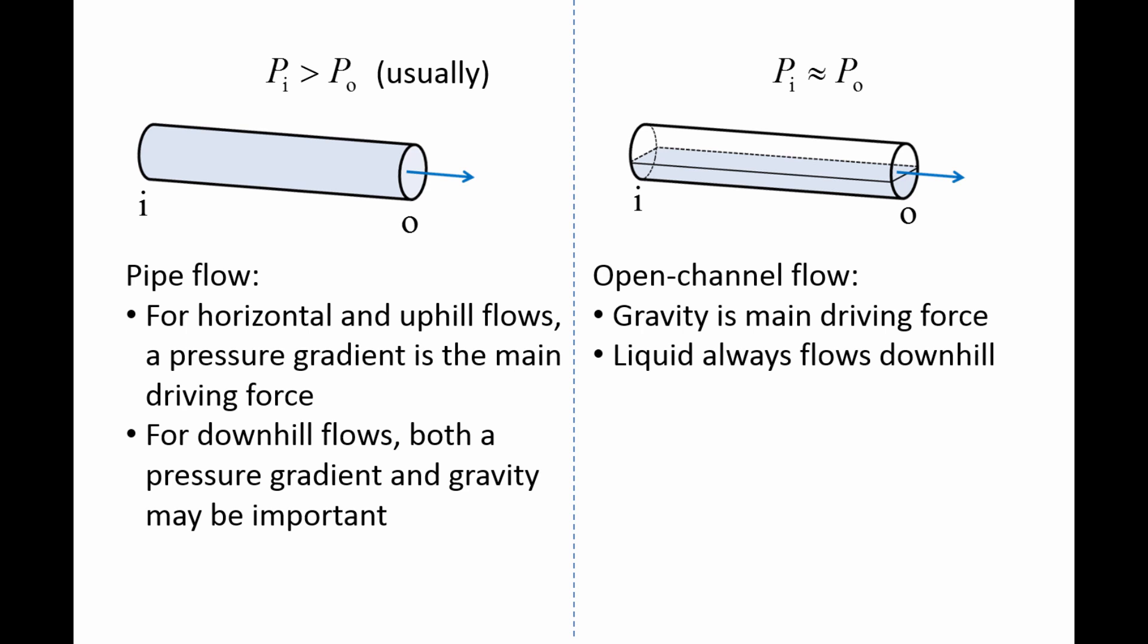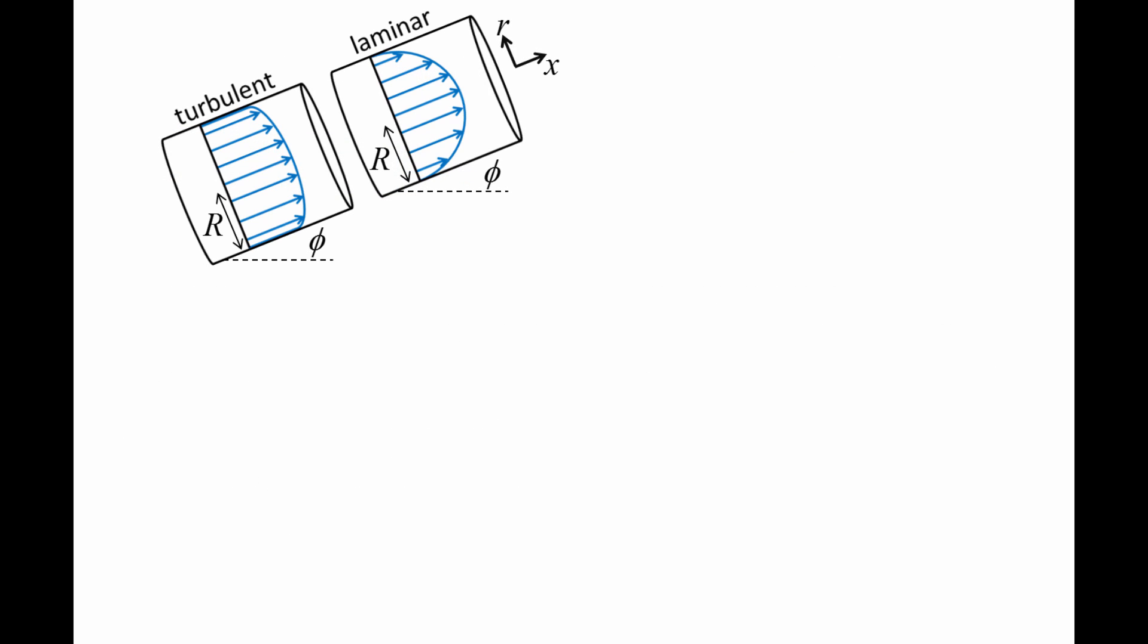We will now examine why pressure gradients develop in pipe flow. Here we have two different pipes of radius R. Both pipes are tilted upward at an angle phi. The fluid in the first pipe is fully developed and turbulent, while the fluid in the second pipe is fully developed and laminar.